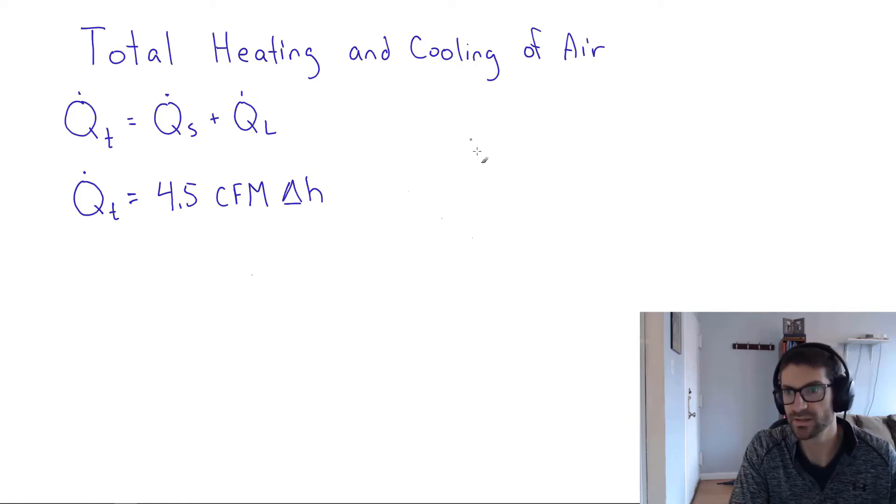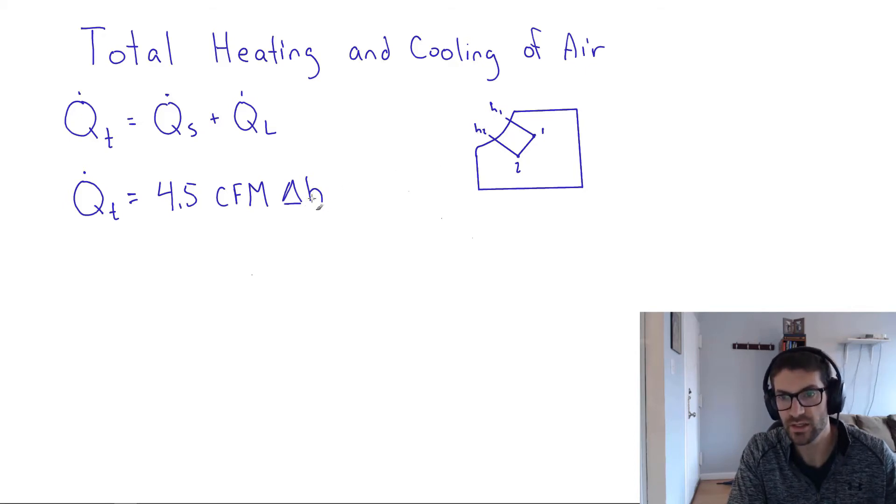So if we're looking at the psychrometric chart and we have a couple of points on there, maybe state 1 and state 2, then we can go up and to the left along a line of constant enthalpy or constant wet bulb, and we can determine the enthalpy at state 1 and the enthalpy at state 2. And that allows us to calculate this change in enthalpy as we go from 1 to 2. The opposite would be true as well if we're going from 2 to 1, just a delta H in a different direction.